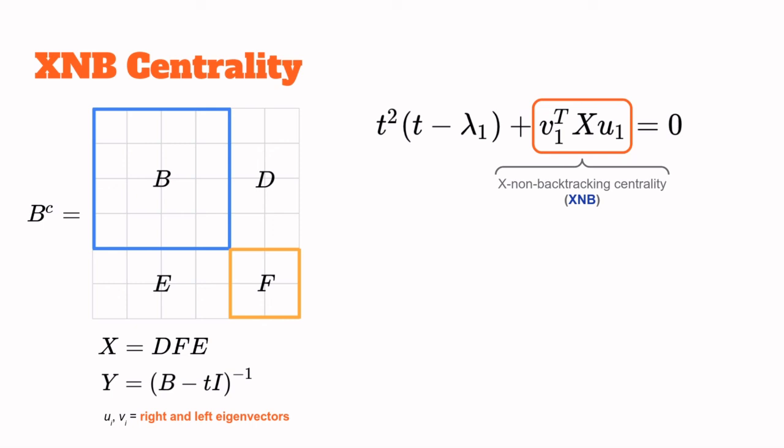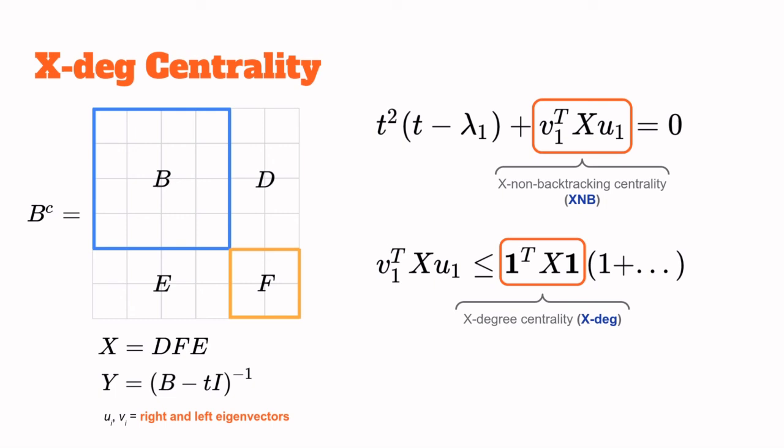That's why we define this term as the X non-backtracking centrality, or XNB, of the target node. In the paper, you will find another procedure that establishes that the XNB centrality is upper bounded, as shown here, where the terms in the three dots can also be neglected. Here we focus on this term, which is not only an upper bound, but also happens to be correlated to the XNB centrality, and so we call it the X-degree centrality.